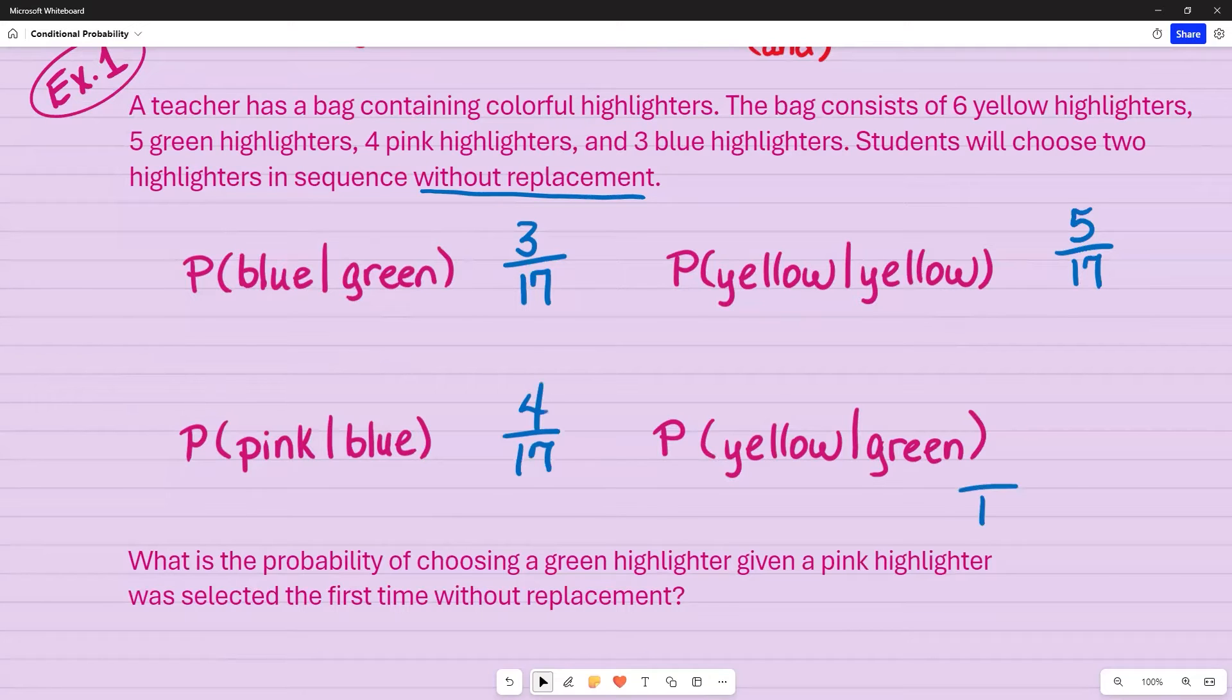For my green, starting off, I have 18 and I have a total of five greens. If I take one of those greens out, I no longer have 18, I have 17. However, I'm now looking at yellow. How many yellows do I have? I have six.